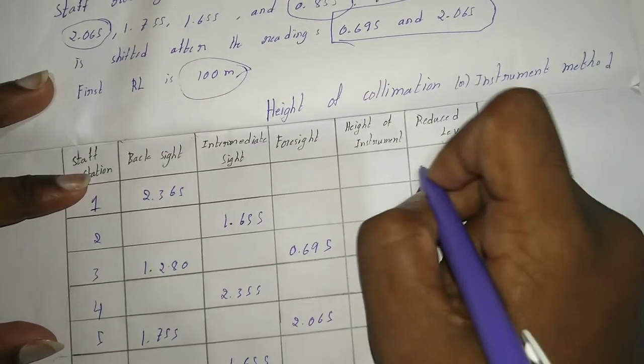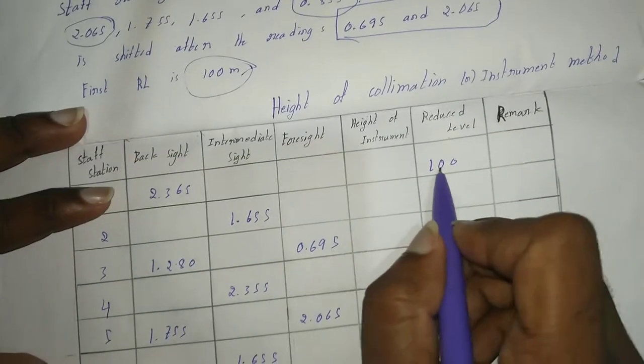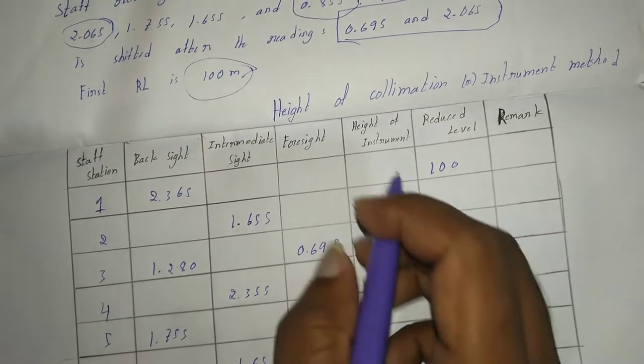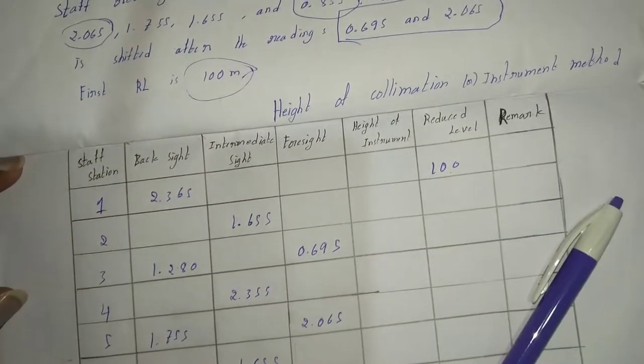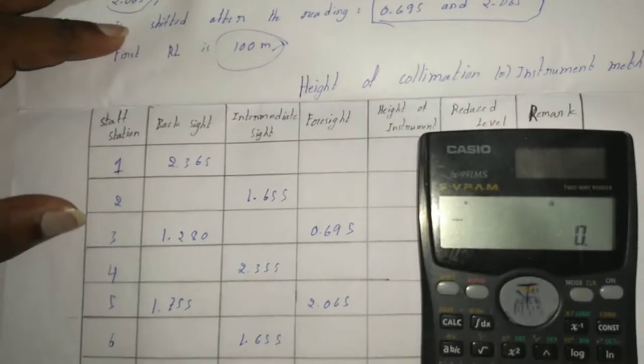Our first RL is 100, then add first RL plus backsight to get height of instrument. I use my Casio to solve this, so first.